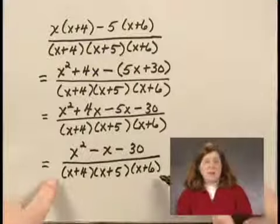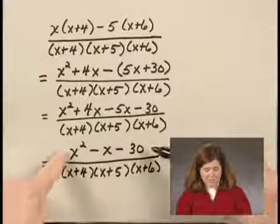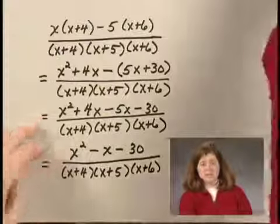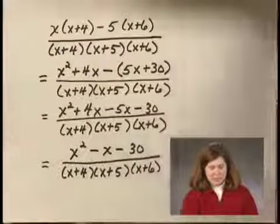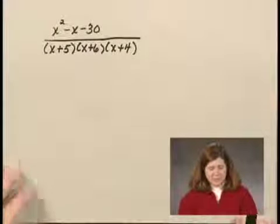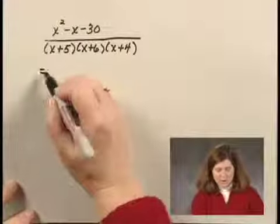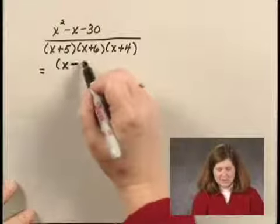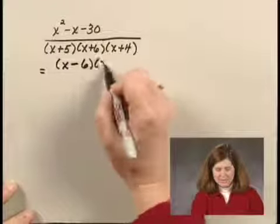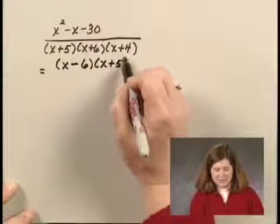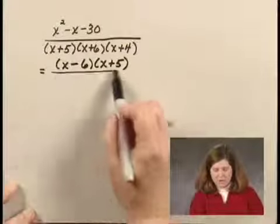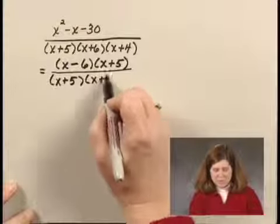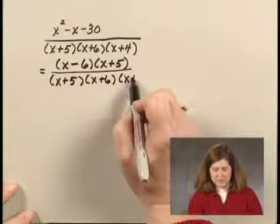Now the denominator is factored. Can I factor the numerator? I can, so I'm going to factor and see if I can simplify. The numerator factors into x minus 6 times x plus 5, and all that is over the denominator x plus 5 times x plus 6 times x plus 4.